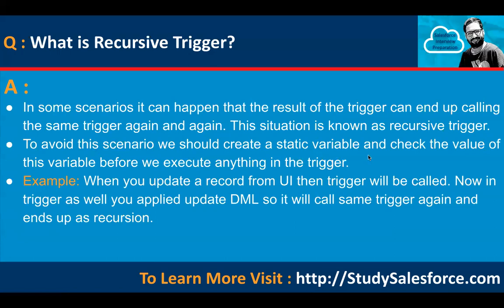A real-time recursive trigger example: when you update a record from the UI, the trigger is called. If inside that trigger you also apply an update DML, it will call the same trigger again and again, resulting in a recursive trigger scenario.